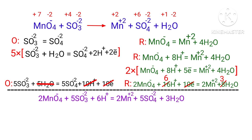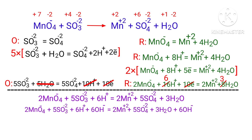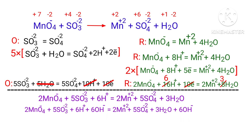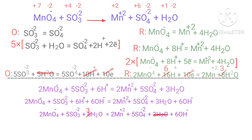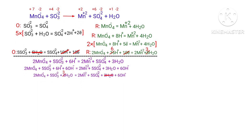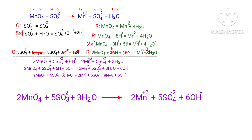For a reaction in basic medium, add one OH⁻ for every H⁺ present in the equation. The OH⁻ must be added to both sides to keep charge and atoms balanced. Then combine OH⁻ and H⁺ on the same side to form water, and cancel the same terms. The equation is now balanced in basic medium.